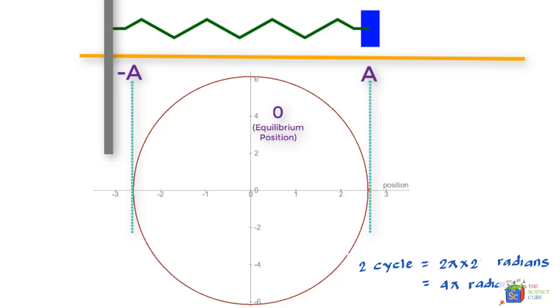So what we see is that the dot covered 2π multiplied by 2, or 4π radians. Likewise, three cycles: if the mass had done three cycles, three cycles would equal three circular movements of this dot, or 2π into 3, or 6π radians.